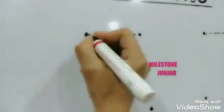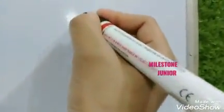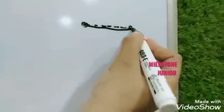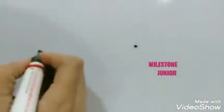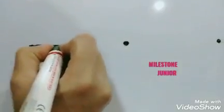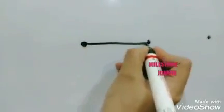Now, we'll make two dots with crayons or pencils. This way you can make sleeping lines.